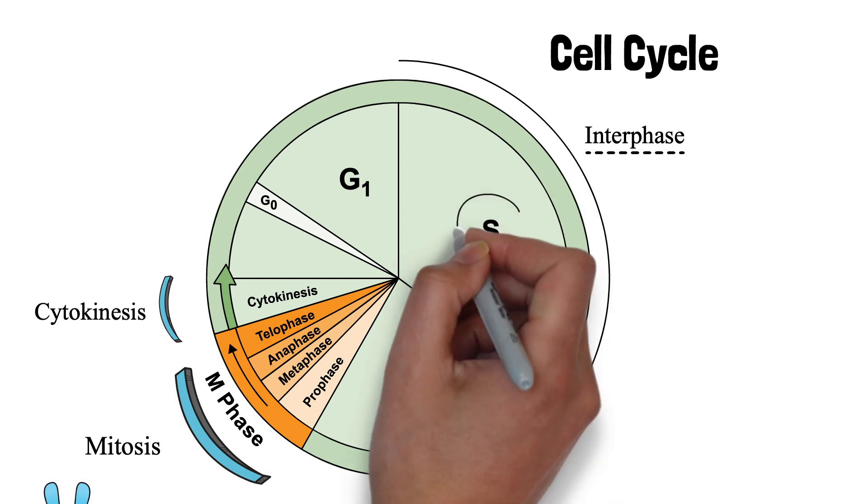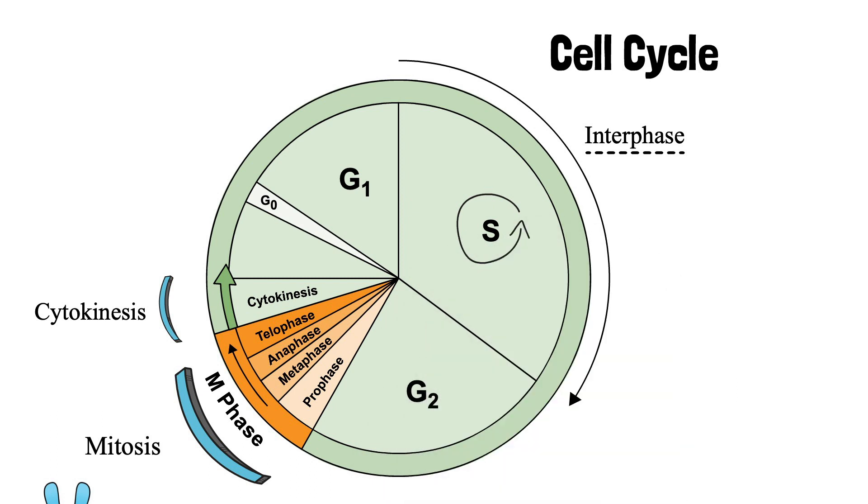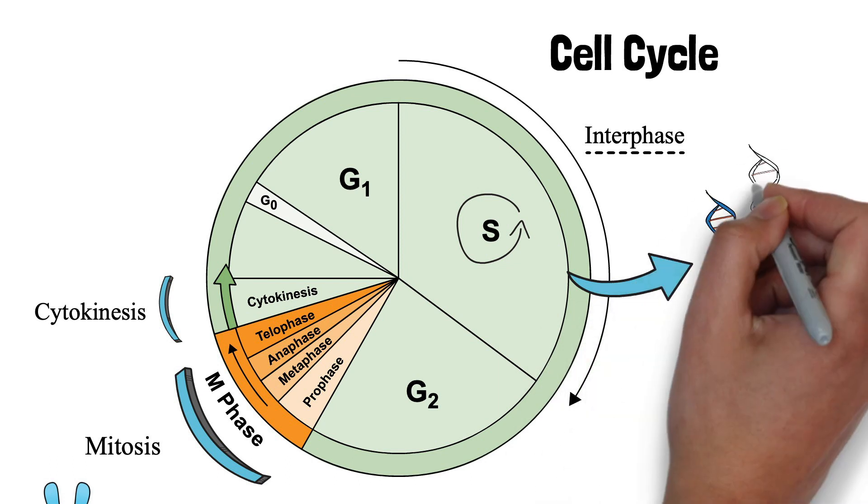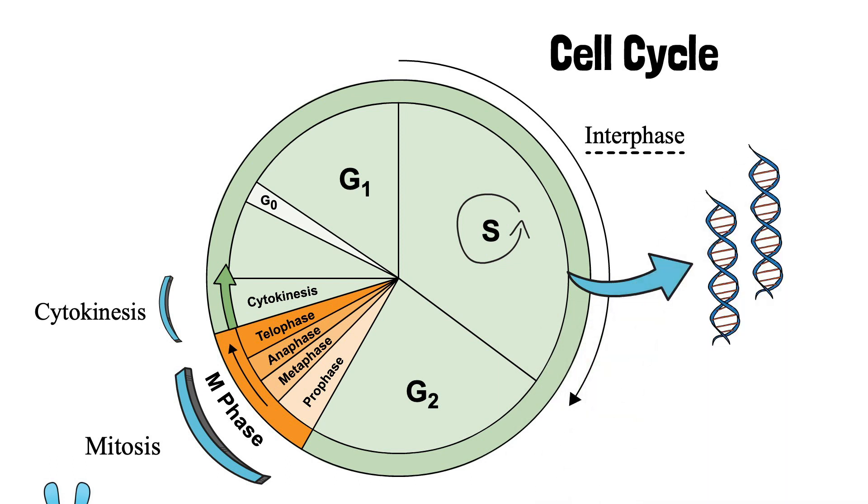The phases of interphase include S phase, where replication of the cell's DNA takes place. DNA gets doubled in number in order to be divided equally among the two daughter cells.